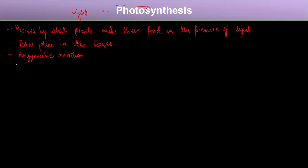Photosynthesis is also known as a physicochemical reaction. The term 'physicochemical' consists of two parts: physical and chemical. It is a type of process in which both physical changes as well as chemical changes take place, and hence it is known as a physicochemical reaction.